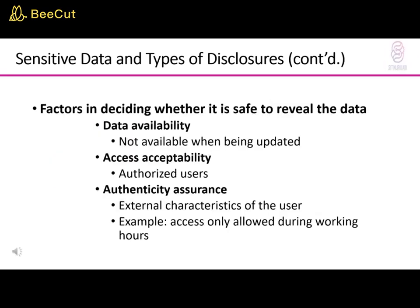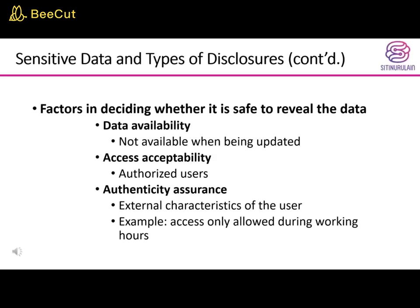It is the responsibility of the DBA and security administrator to collectively enforce the security policies of an organization. This dictates whether access should be permitted to a certain database attribute, also known as a table column or data element, for individual users or categories of users. Several factors need to be considered before deciding whether it is safe to reveal data; the three most important factors are data availability, access acceptability, and authenticity assurance.